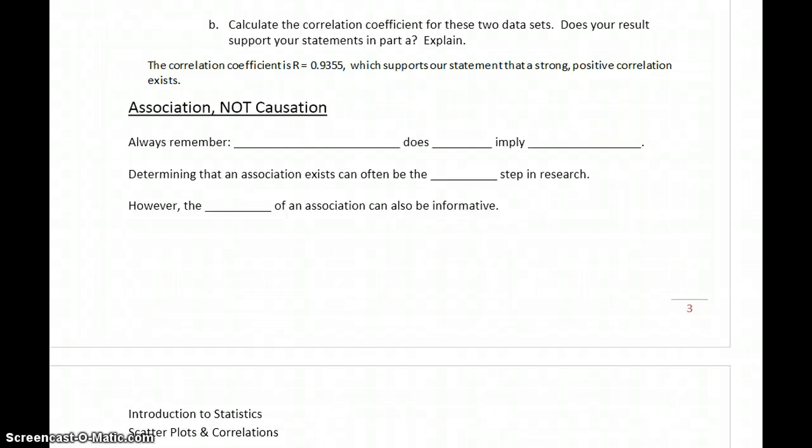We've introduced scatter plots as a way to visually depict the association between two variables. The correlation coefficient is a way to measure that relationship, if any exists.